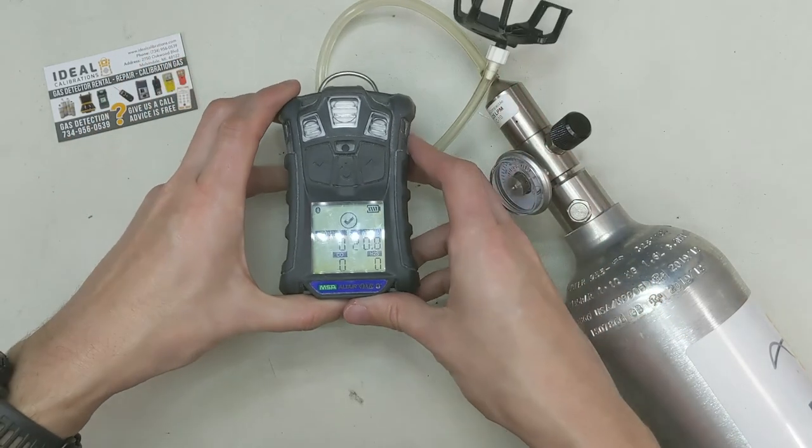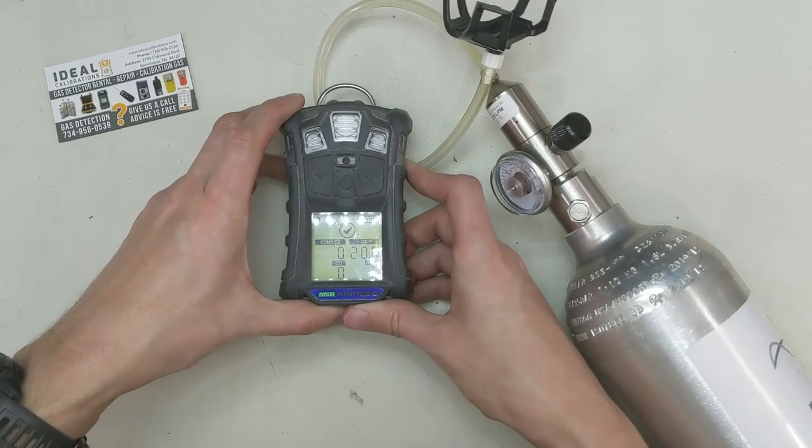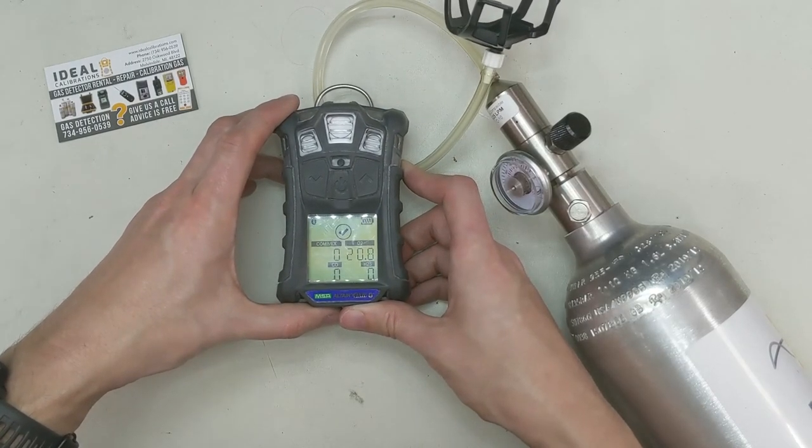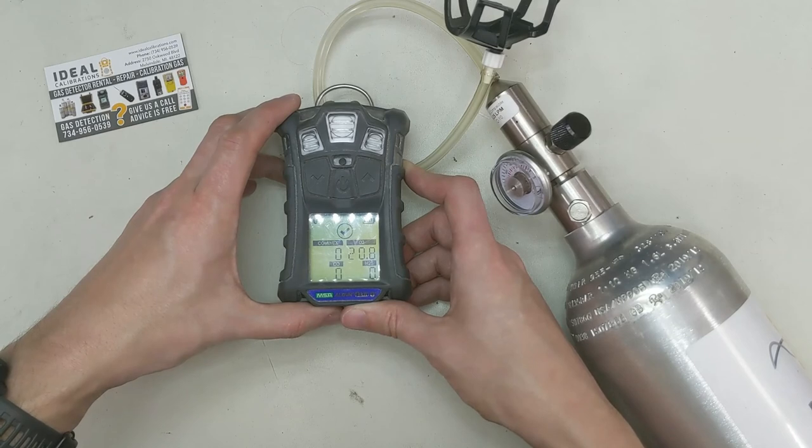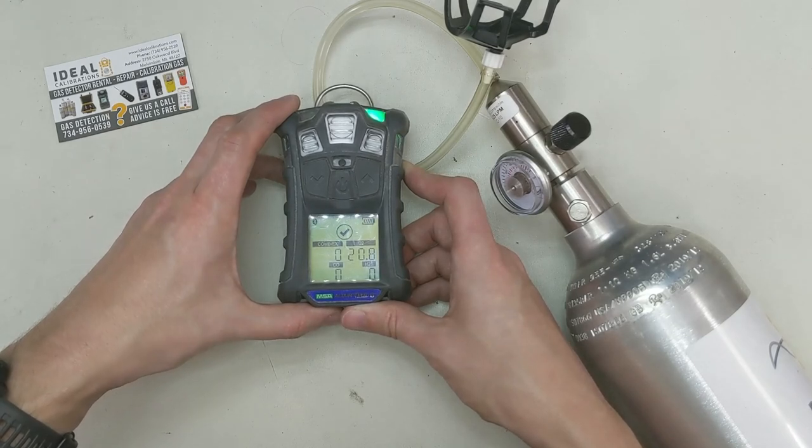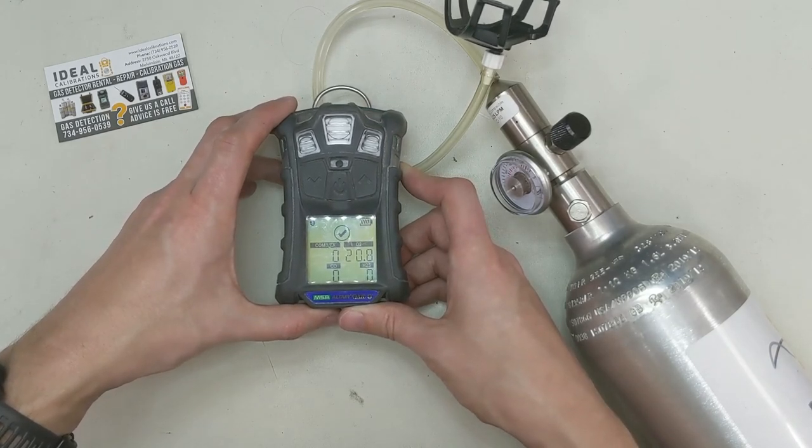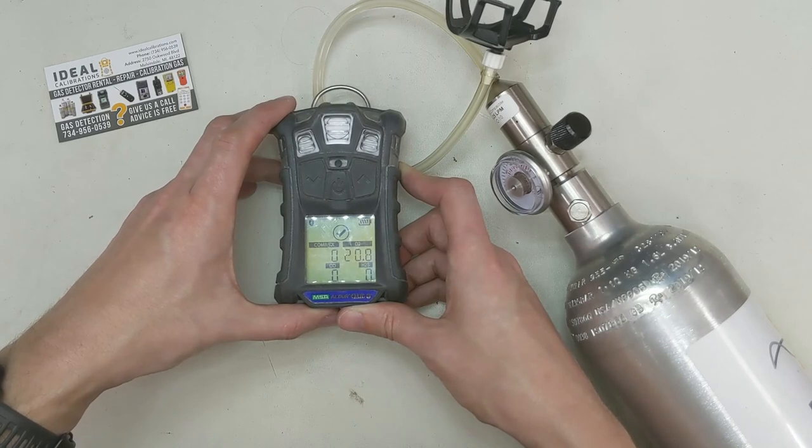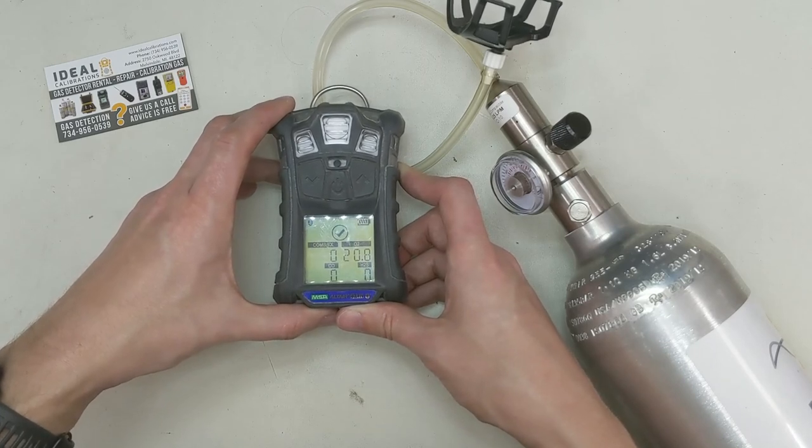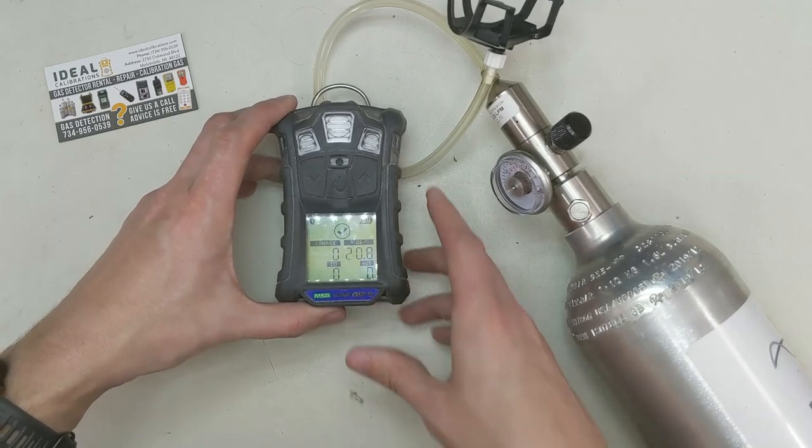If you have any questions, feel free to give us a call. Our number here is 734-956-0539. Again, that's 734-956-0539, or you can send us an email to our support box and we'll get back to you pretty quick. It's support@idealcalibrations.com. And again, my name is James Moore. Thanks for watchin'.